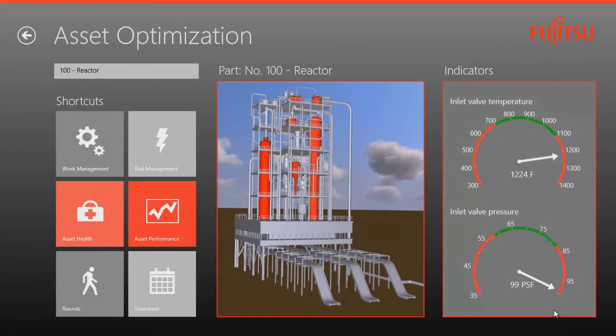Through integration with SAP 3D Visual Enterprise, I'm provided with a 3D view of the refinery that denotes all current operational anomalies by color. It's very easy to see that there's something wrong with my plant. SAP 3D Visual Enterprise captures the current state of our reactor in real time, with indicators showing that both the temperature and pressure of the reactor are out of spec.